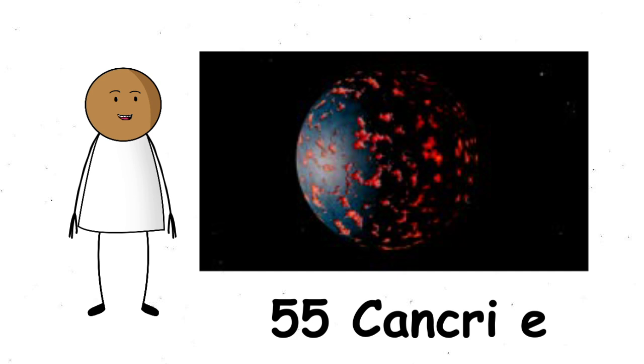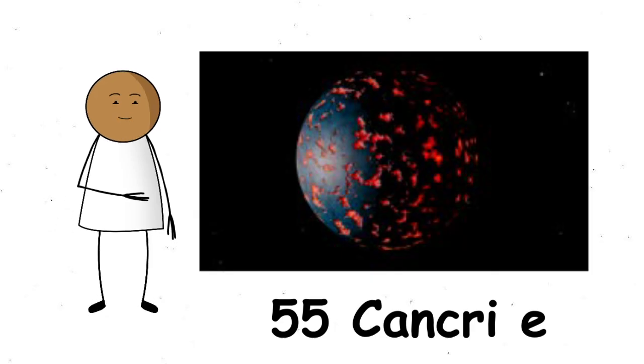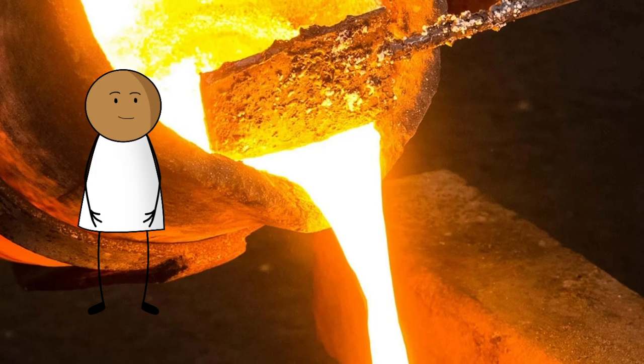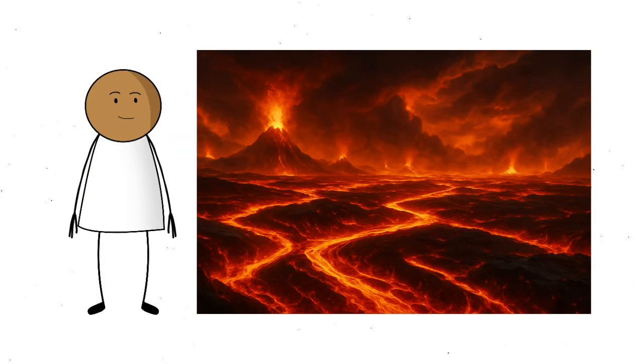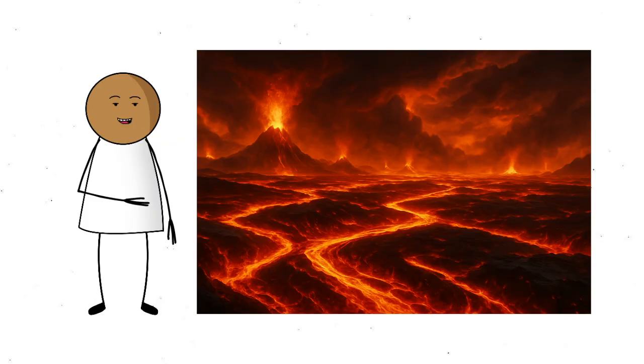One example? Say hello to 55 Cancri e, a planet so close to its star that the surface heats up to about 3,600 degrees Fahrenheit or 1,900 degrees Celsius. That's hot enough to melt iron. And guess what? The planet might actually have rivers of molten lava flowing across it.